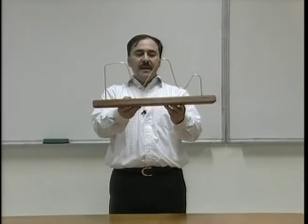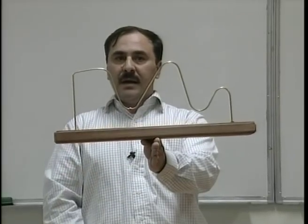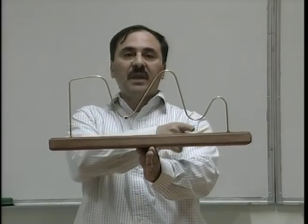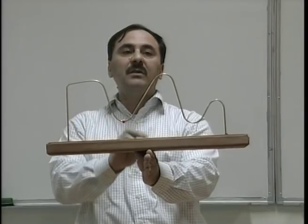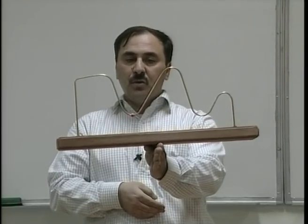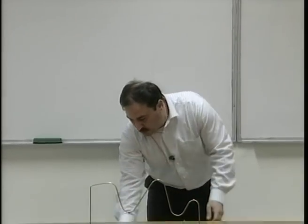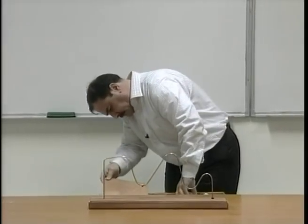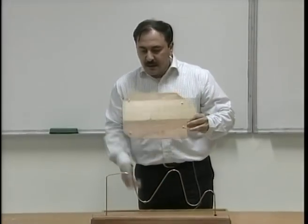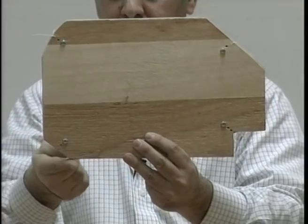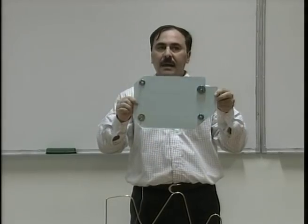Rotational equilibrium means that if the object is held in front of me, I need to find where to put the axis of rotation so that it will remain stable. Due to being homogeneous, I have been able to put my hand exactly in the center of the piece. Homogeneous means that the material is distributed regularly throughout, so I can put my hand exactly in the center to reach the point of rotational equilibrium. I will now bring a non-homogeneous piece and put it in front of you.